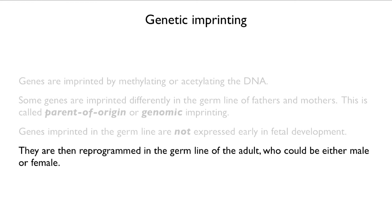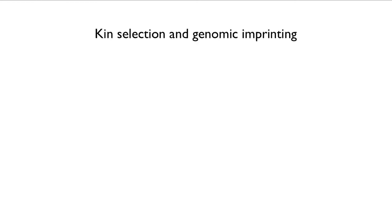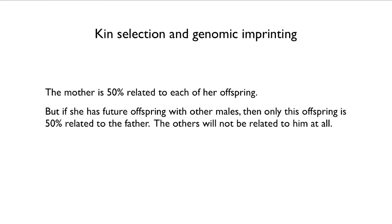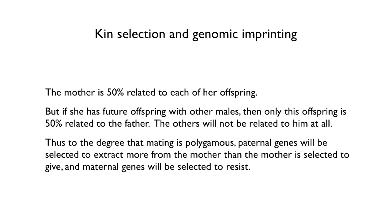Before the genes re-enter the germline for the next generation, they are reprogrammed — since the adult could be male or female, it must have the imprinting pattern appropriate to its sex. There is a relationship here to kin selection. The mother is 50% related to each offspring, but if she has future offspring with other males, only this offspring is related to the current father. To the degree that mating is sequentially polygamous, paternal genes will be selected to extract more from the mother than the mother is selected to give, and maternal genes will be selected to resist.